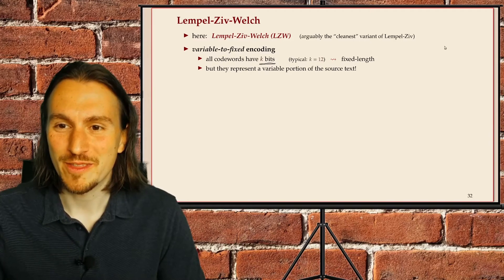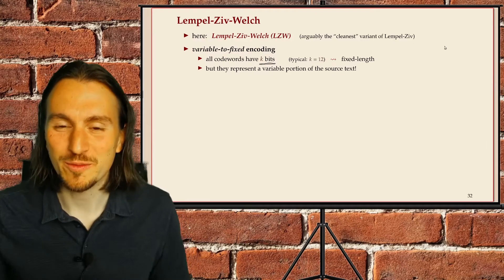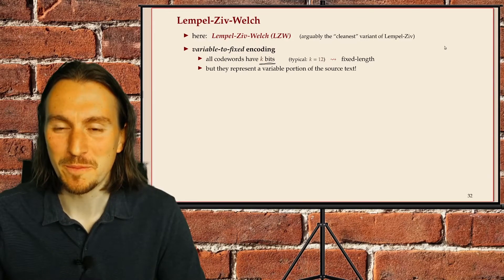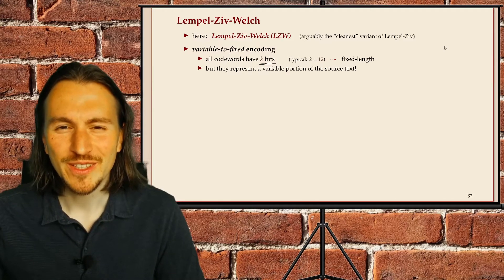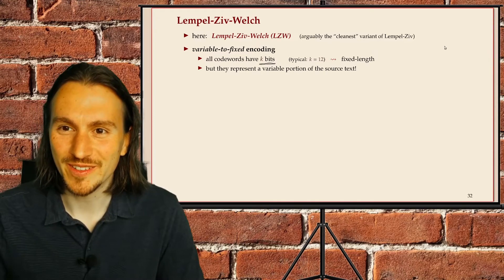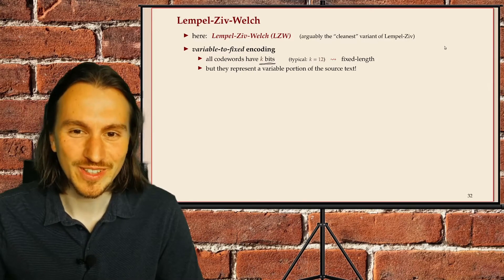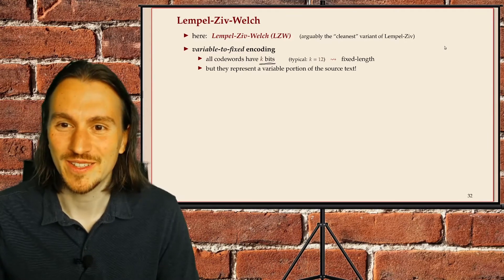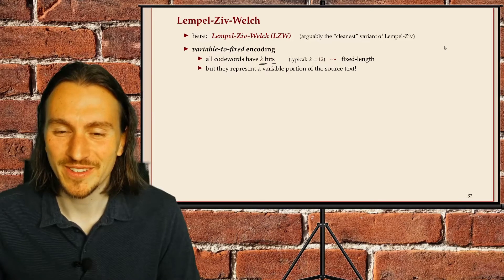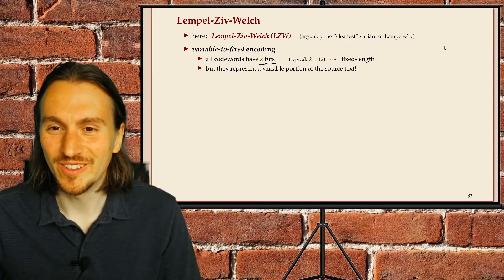The Lempel-Ziv-Welch algorithm is a variant of the Lempel-Ziv family of compression methods — arguably the cleanest and nicest, and also very practical. It used to be protected by a patent, which made it somewhat controversial and caused legal trouble, but the patent has expired since the method was old enough, so this is no longer an issue.